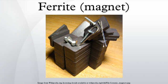Some ferrites have a hexagonal crystal structure, like barium and strontium ferrites BaFe₁₂O₁₉ and SrFe₁₂O₁₉. In terms of their magnetic properties, the different ferrites are often classified as soft or hard, which refers to their low or high magnetic coercivity.